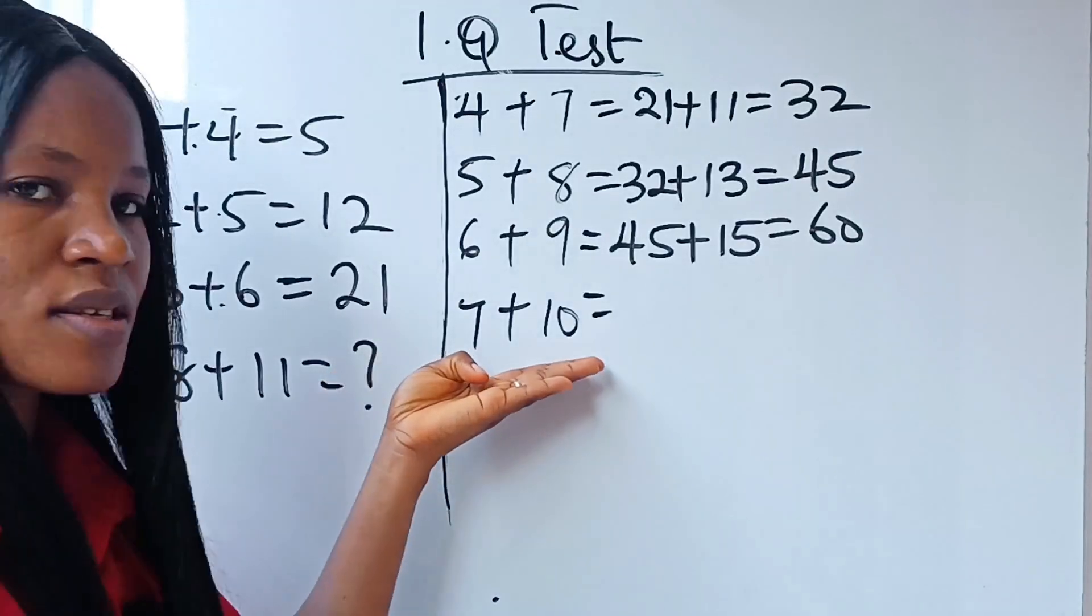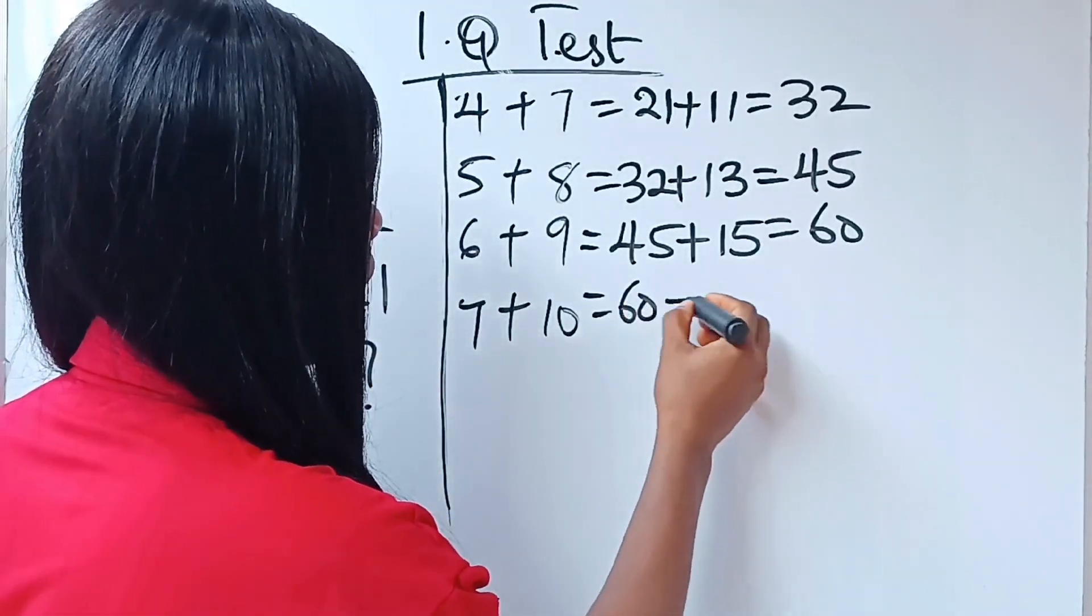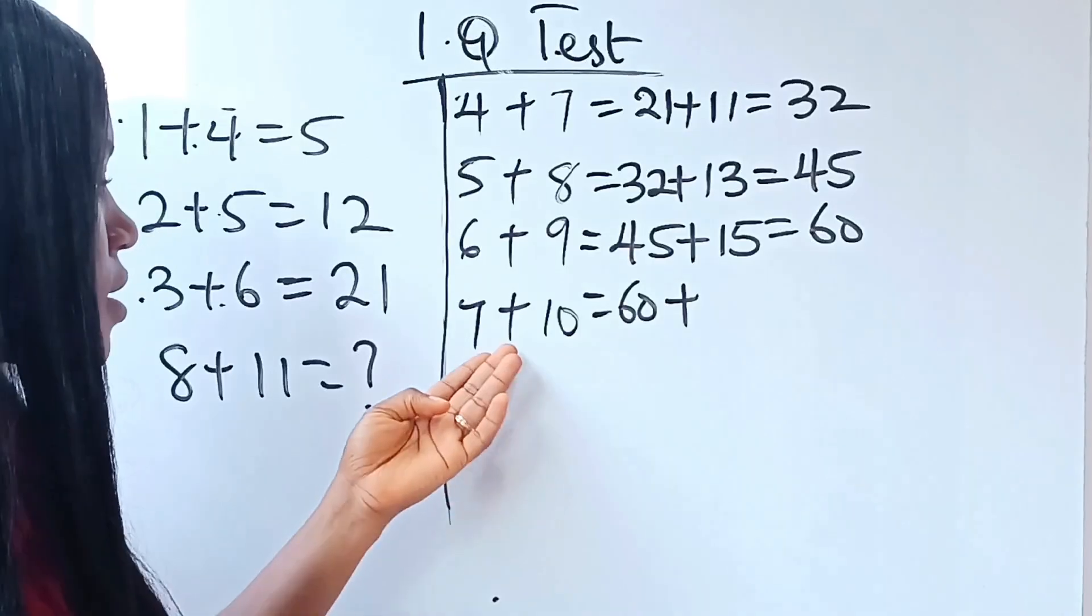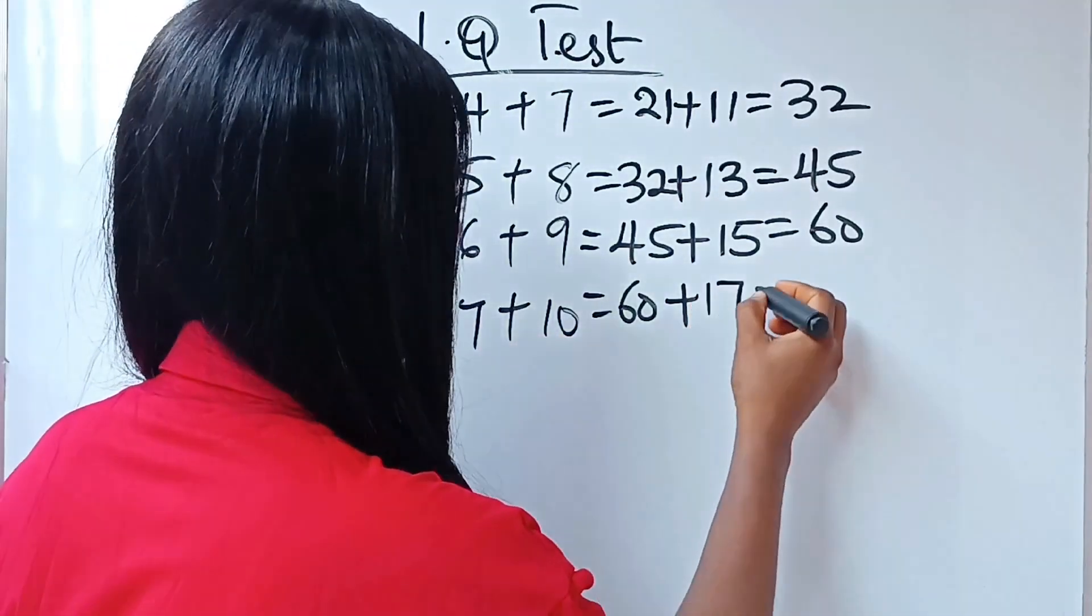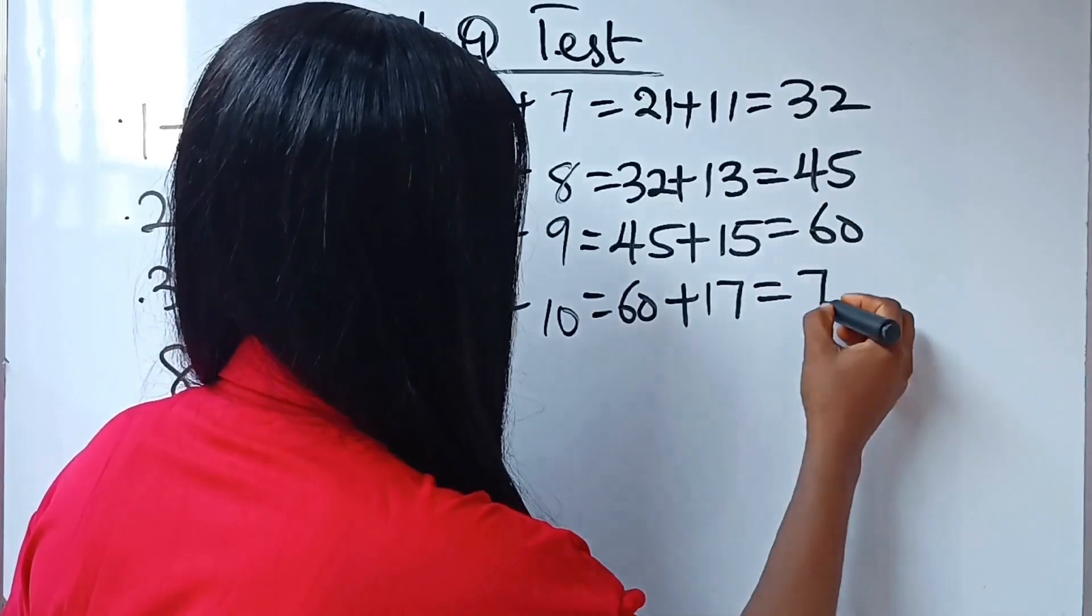Okay. So, for this, it's going to be what? 60 plus 7 plus 10 is what? 17. 17. So, we have what? 77.